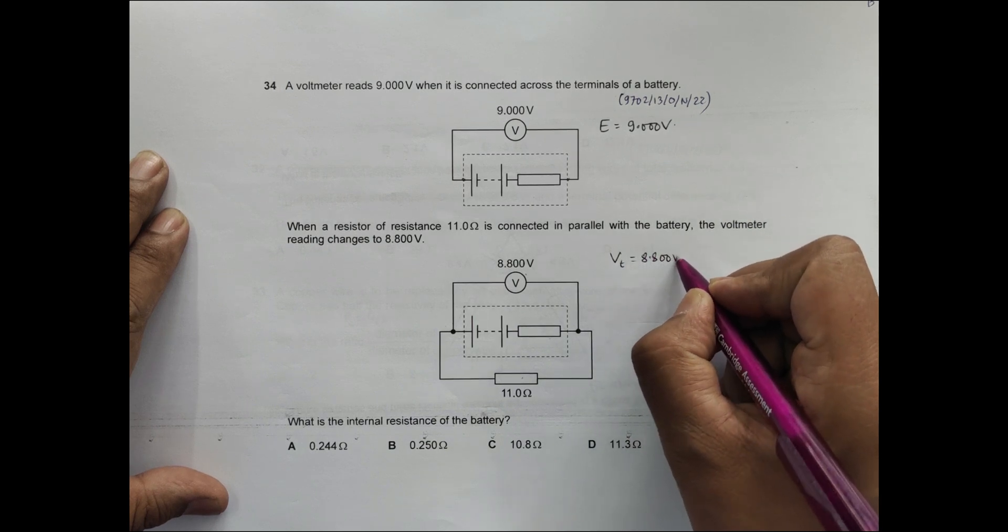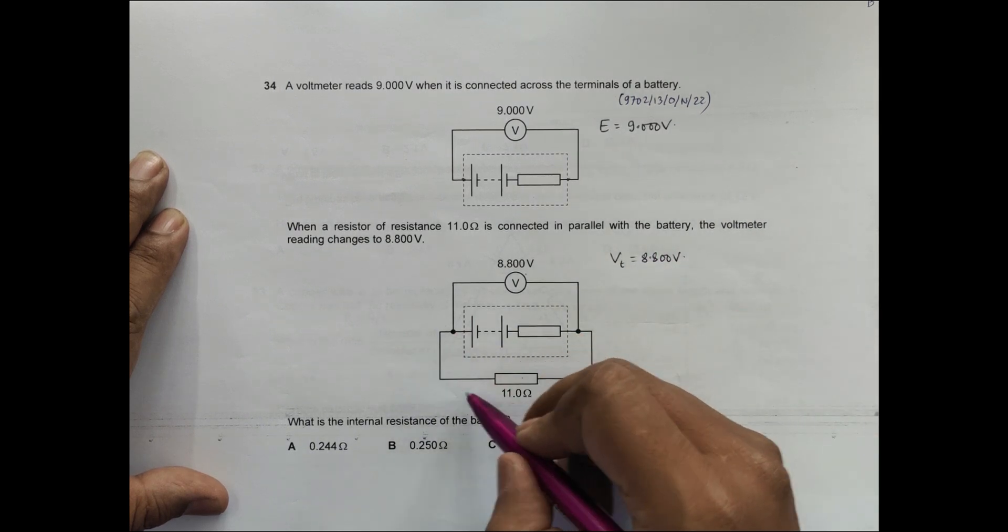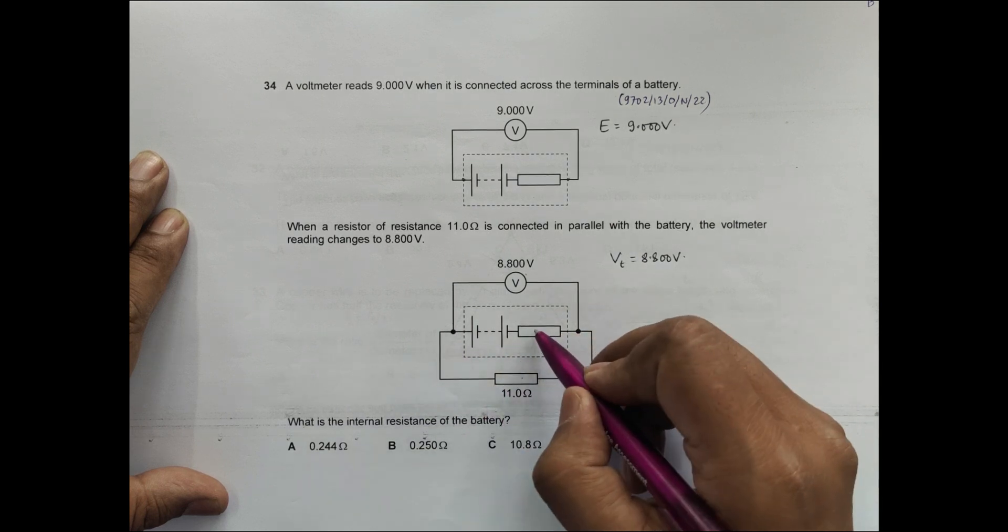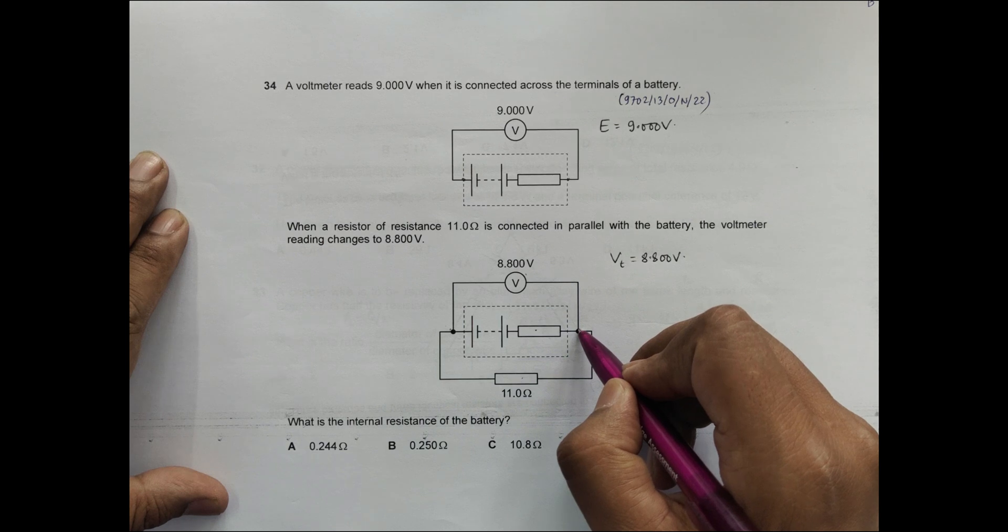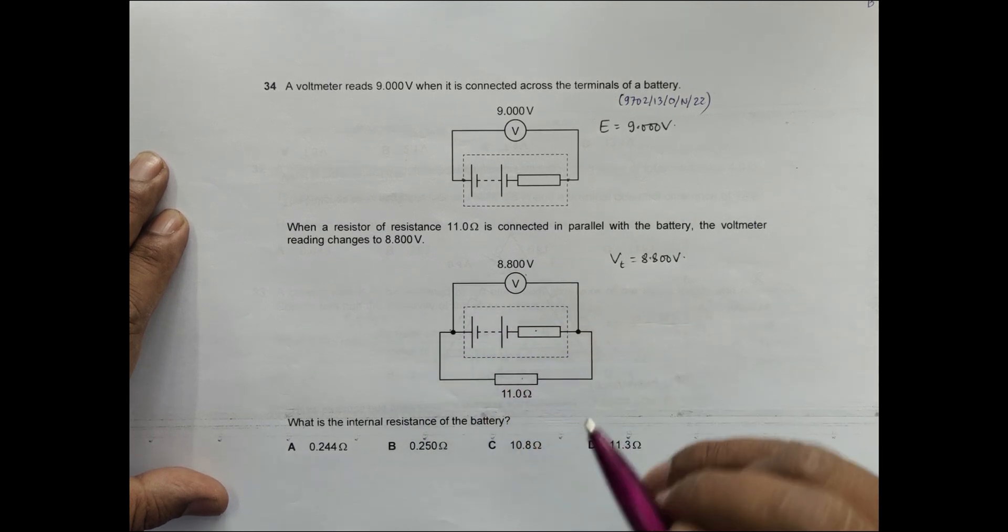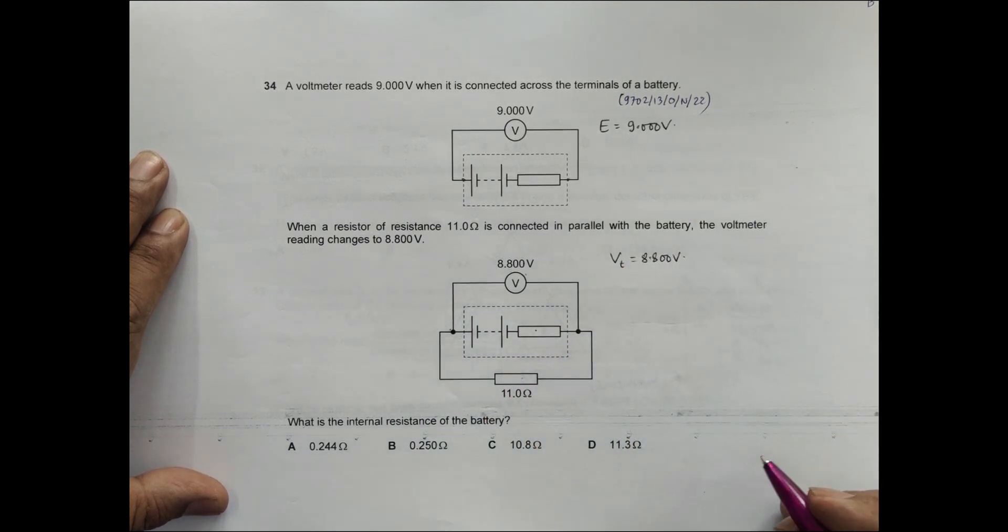Because here the current flows through this path and there is some loss here, the PD is less than the overall EMF. That is V_T.